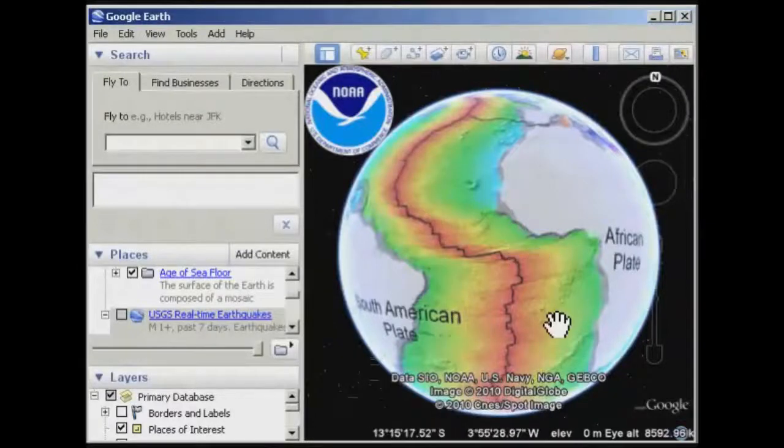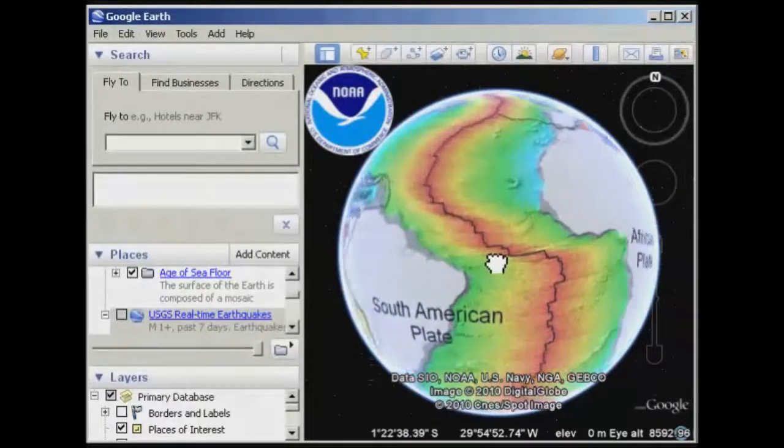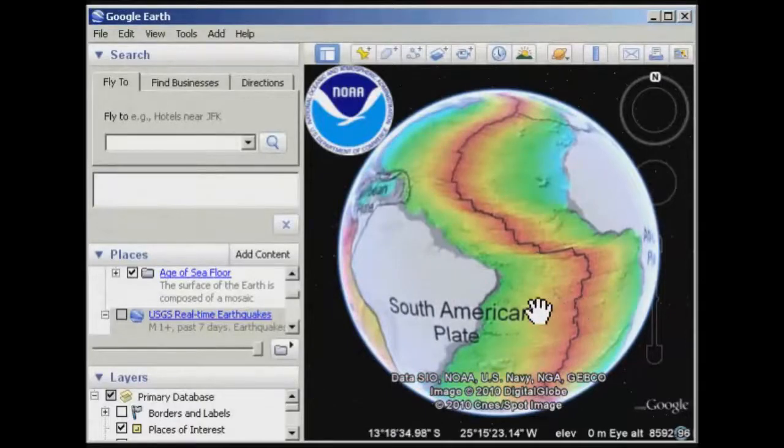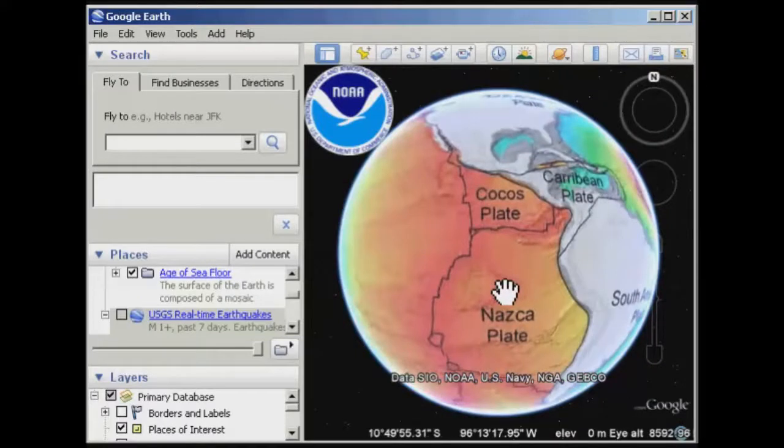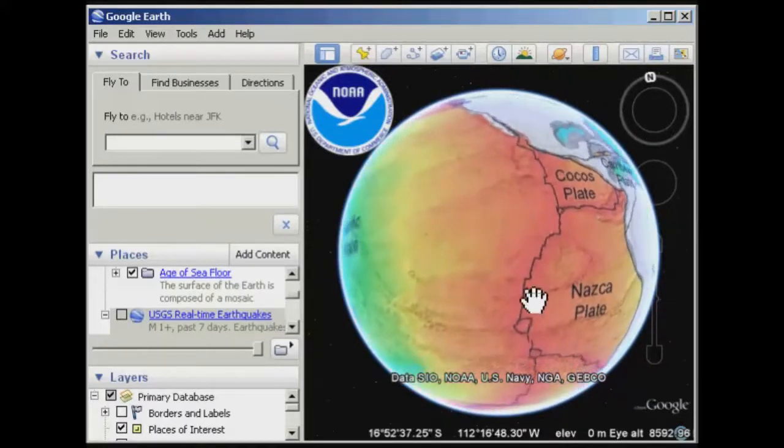At the moment, I've got the age of the sea floor layer ticked on. What you can see is a different color scheme going across the ocean floor—a rainbow color scheme, basically a range of reds through to blues and greens.